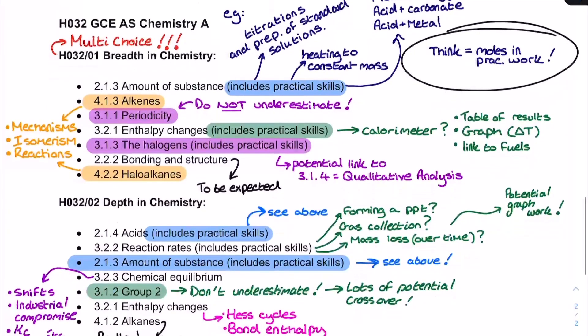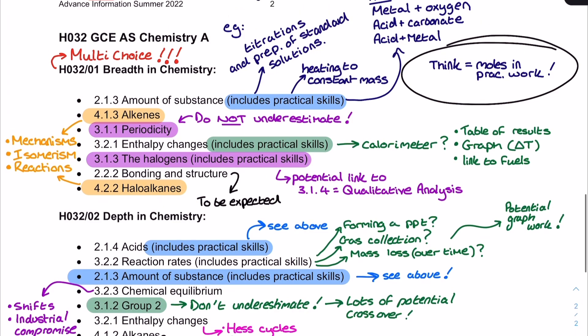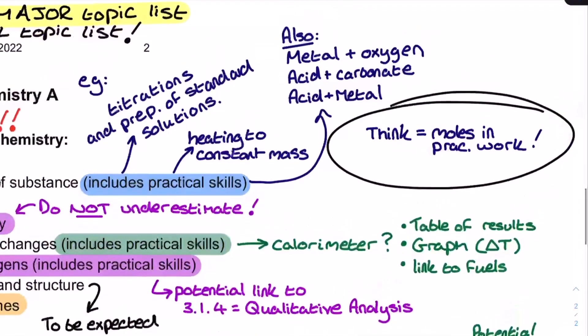So what else have I noticed? Well, in both papers, both the breadth in chemistry and the depth in chemistry, I've noticed a lot of emphasis here on amounts of substance and then acids with practical skills included. So what kinds of practicals are we looking at? Well, straight away, titrations or preparation of standard solutions. So this would be things like, can you read the burette if they give you a little snippet of it? Do you know what a table of results looks like? Can you use the ratio in a reaction equation to find out the moles of an unknown component? Can you describe in a level of response question how to prepare a standard solution? But also, not forgetting, acid and carbonate and acid metal reactions.